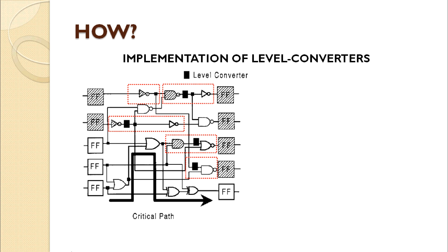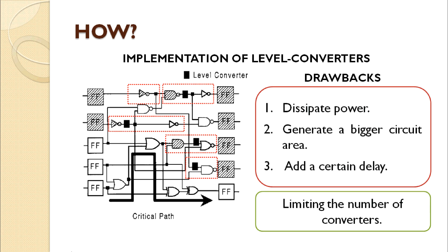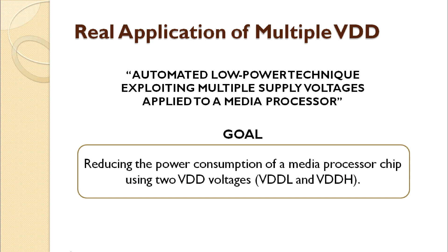Although using multiple VDD voltages reduces power consumption in some parts of the circuit, the level converters present some drawbacks: they dissipate power, generate a bigger circuit area, and add a certain delay. Therefore, it is important to limit the number of converters.